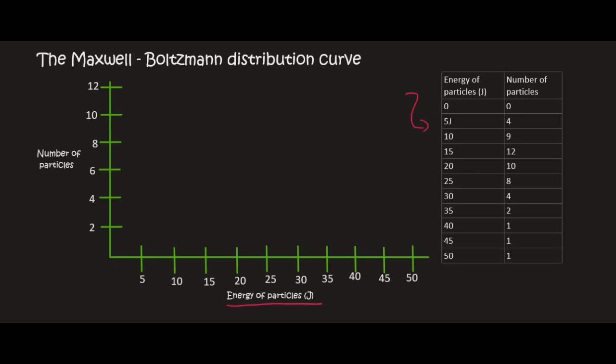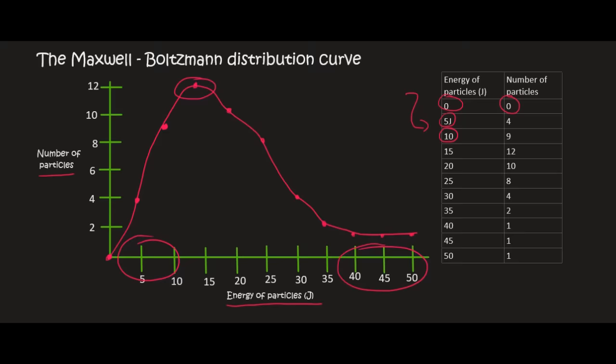Our table starts at zero, zero, because obviously there are no particles that have no energy — everything in life has to have some type of energy. Then there were particles that had 5 joules of energy and if we counted how many there were, there were 4 of them. The number of particles that have 10 joules of energy, there were 9 of them. I'm going to complete the rest, and we can then draw a curve through this, which gives us an idea of the energy within the system. The particles over here are your very high energy particles because they've got 40, 45, and 50 joules of energy. These are your very low energy particles, and most of the particles — the peak — was at 15 joules.